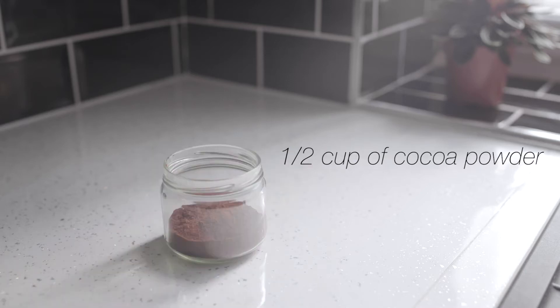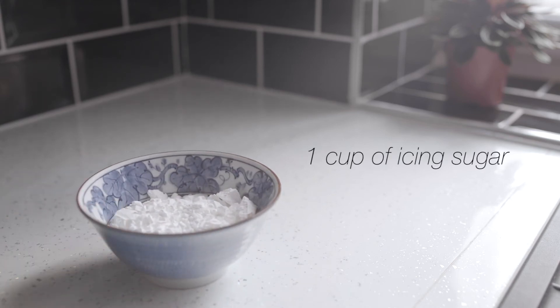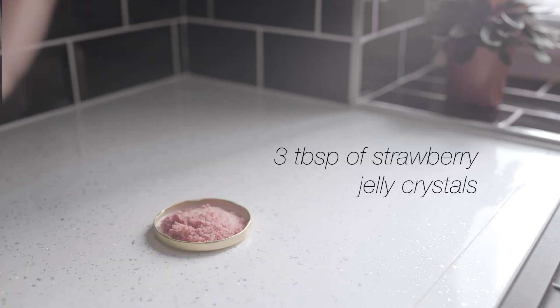For the chocolate icing you'll need 50 grams of melted butter, one cup of icing sugar, half a cup of cocoa powder and a quarter of a cup of milk. For the strawberry icing you will need one cup of icing sugar and three tablespoons of strawberry jelly crystals. You'll also need two cups of desiccated coconut.